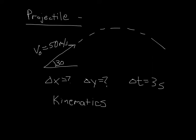If we're going to do this in two dimensions, we need to break up our vector that represents the total velocity, 50 meters per second. We need to separate that into what's going on in the x direction and y direction.